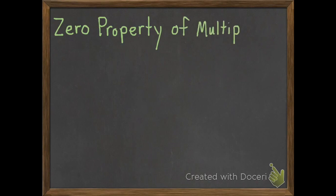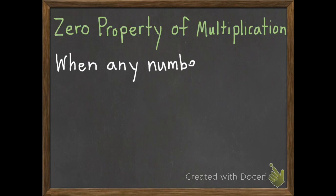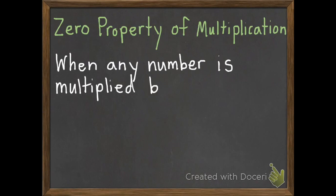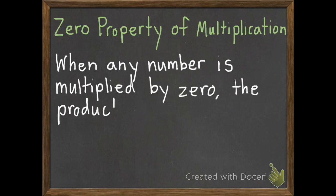Third, we have the zero property of multiplication. The zero property of multiplication says that when any number is multiplied by 0, the product is 0.